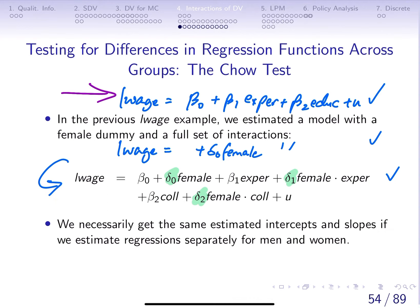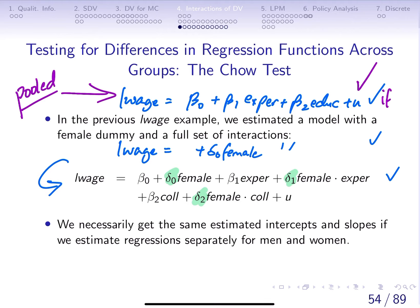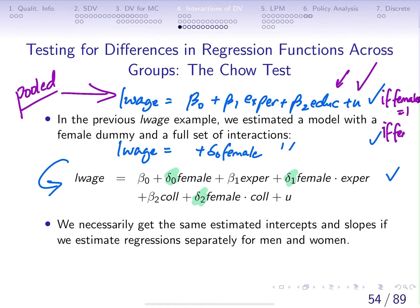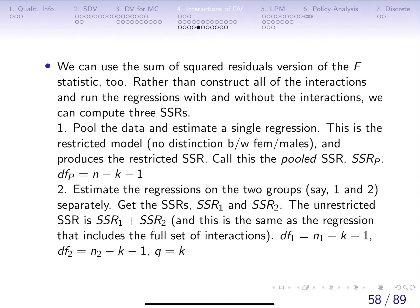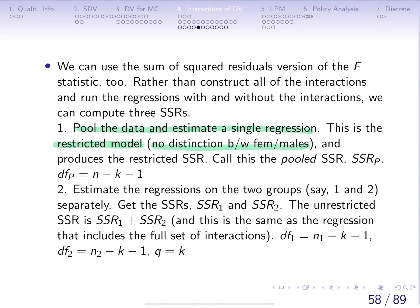We're going to think about a regression that doesn't make a distinction between males and females — we'll call this a pooled regression because males and females are pooled together. Versus that, we're going to estimate two separate regressions: one for females where female equals one, and another one where female equals zero, which is the regression for males. The pooled model is your restricted model, and it will produce a restricted sum of squared residuals, which we'll call SSRP, where P signifies pool.